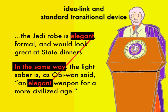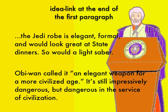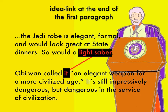Some teachers might tell you to put your transition at the end of the first paragraph instead of the beginning of the second one. I don't really care for this myself, but it's fine. Here's what it looks like: 'The Jedi robe is elegant, formal, and would look great at state dinners. So would a lightsaber.' Do you see how the last line in the first paragraph mentions the lightsaber right before the paragraph that's actually about lightsabers? That's another way to do it.